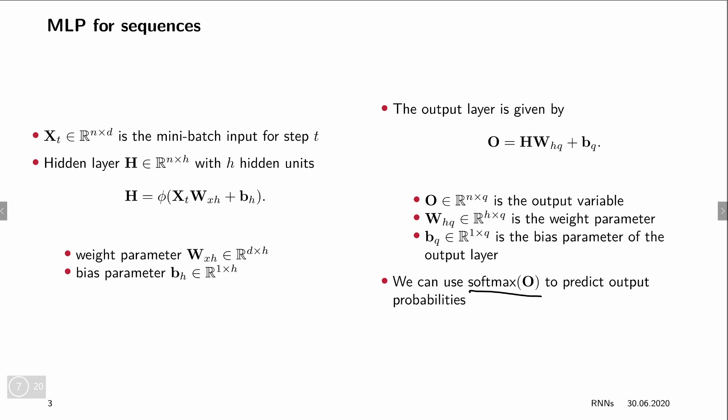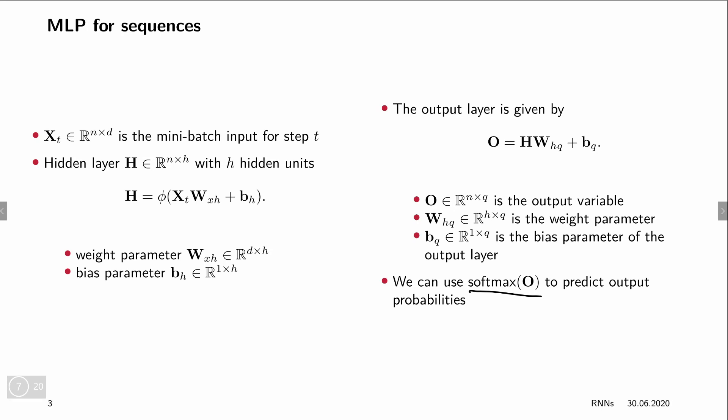Given this hidden layer, we compute the output layer using a linear function in the hidden layer plus a bias vector, again using broadcasting. In the case of language modeling, where we want to predict the probability of words, we have a classification problem, so we apply a softmax to this output to predict word probabilities. We can use this to classify each element of a sequence, using xt as the input — a mini-batch for step t — producing output ot, where in language modeling xt could be the previous word and xt+1 the output.